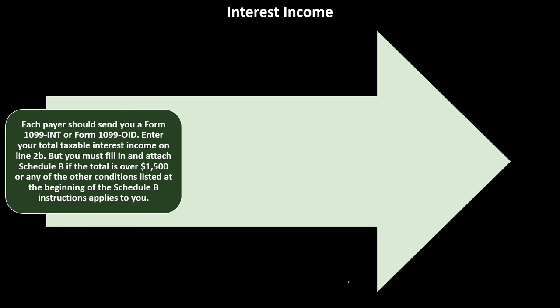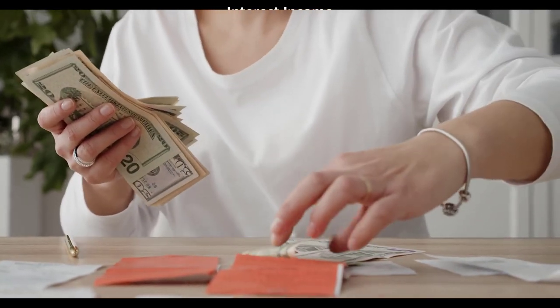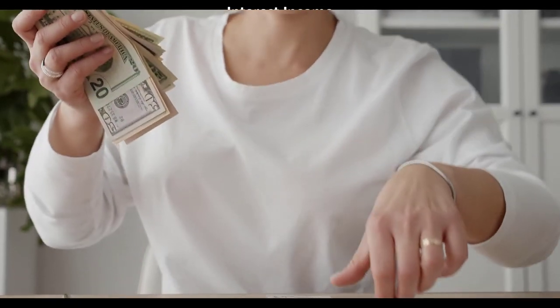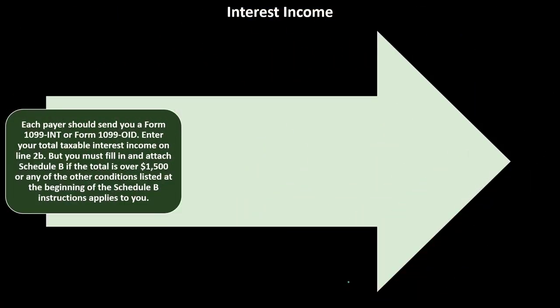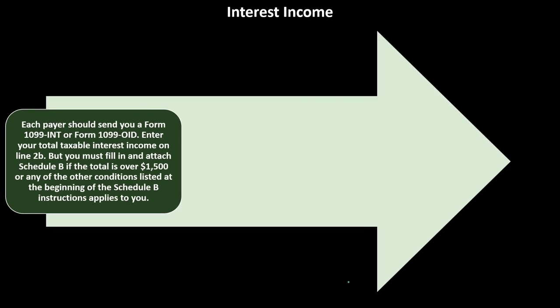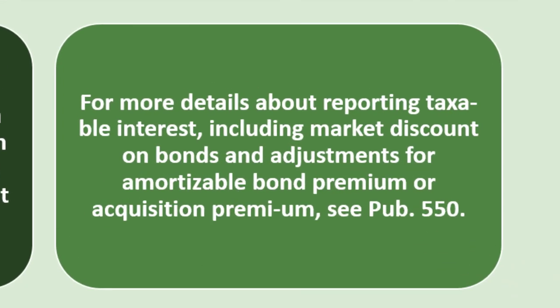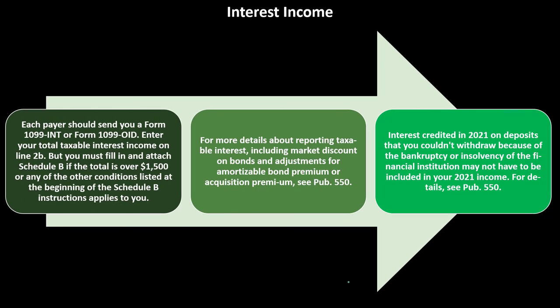You must fill in and attach Schedule B if the total interest income is over $1,500, or if any of the other conditions listed at the beginning of the Schedule B instructions apply. In general, if you have a small amount of interest you might not need Schedule B, but once interest income — and or dividend income — exceeds $1,500, you'll need to include Schedule B to provide more detail to the IRS, and that number pulls into the first page of the 1040.